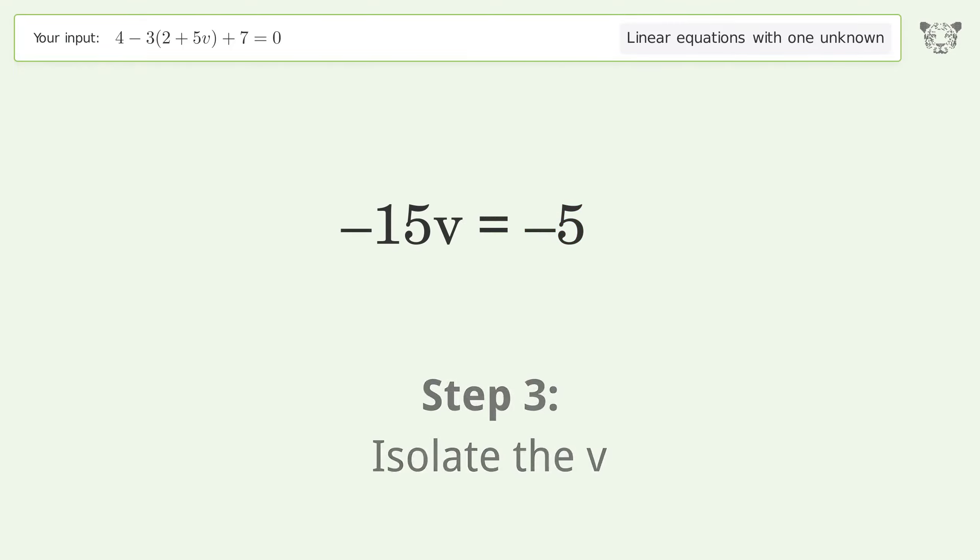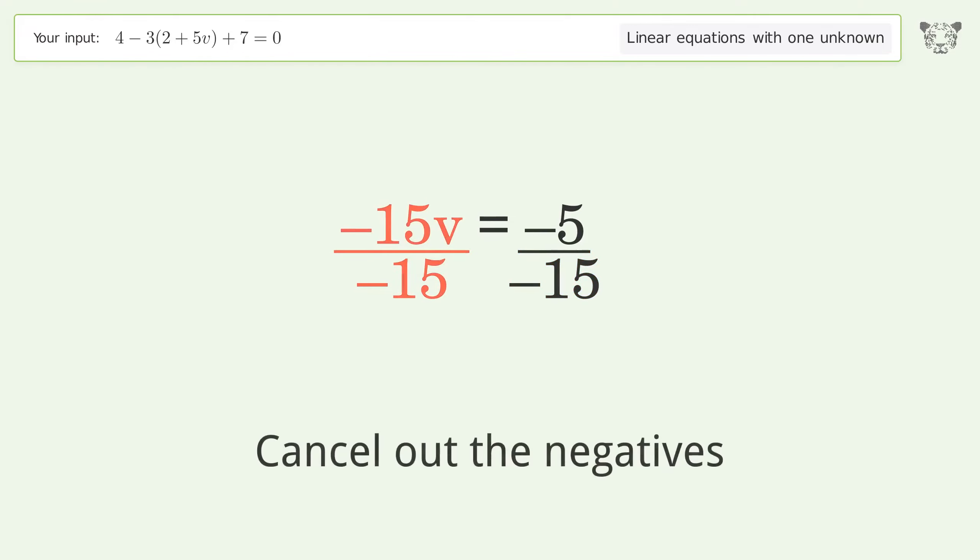Isolate the v. Divide both sides by negative 15. Cancel out the negatives.